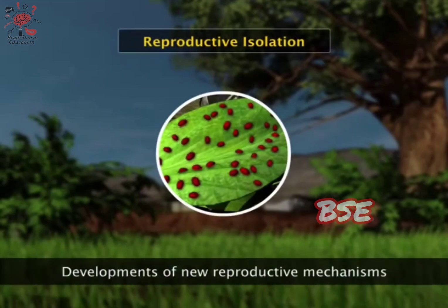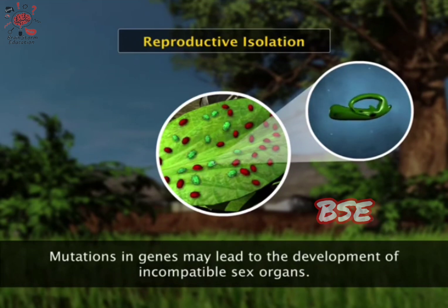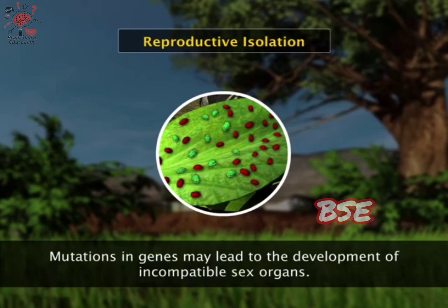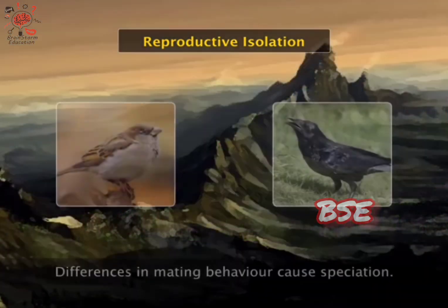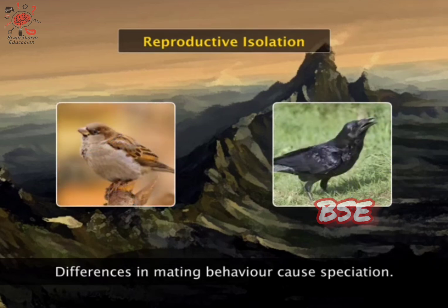It is also possible that within a population, some members develop different reproductive mechanisms or mating habits. For example, a few members of a population may develop differently shaped genitals which do not fit with those of the members of their parental population. In this case, mating becomes impossible, and the population shows reproductive isolation. This cuts gene flow and leads to the formation of new species.